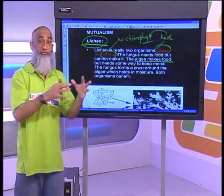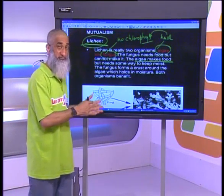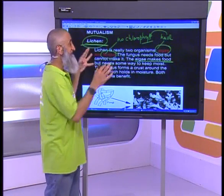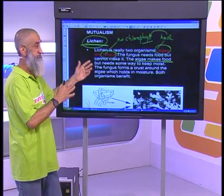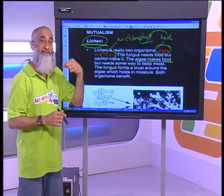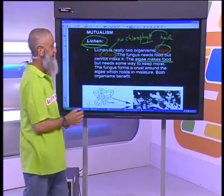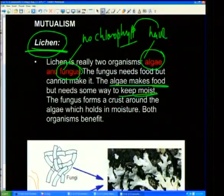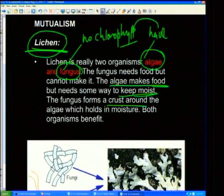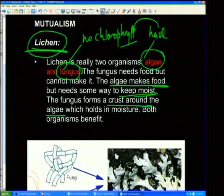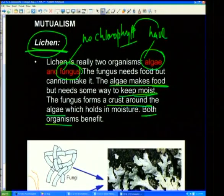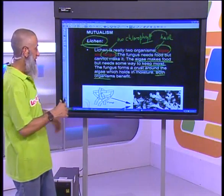There should be two organisms for this relationship — one organism on its own cannot have a relationship. So we're talking about algae and fungi having a mutualistic relationship. Going one step further: we explain how they benefit each other. The algae makes food but needs some way to keep moist, so the fungus forms a crust around the algae which keeps the moisture in. Both organisms benefit — the algae gets protection and cover so it remains moist, and the fungus gets food from the algae.